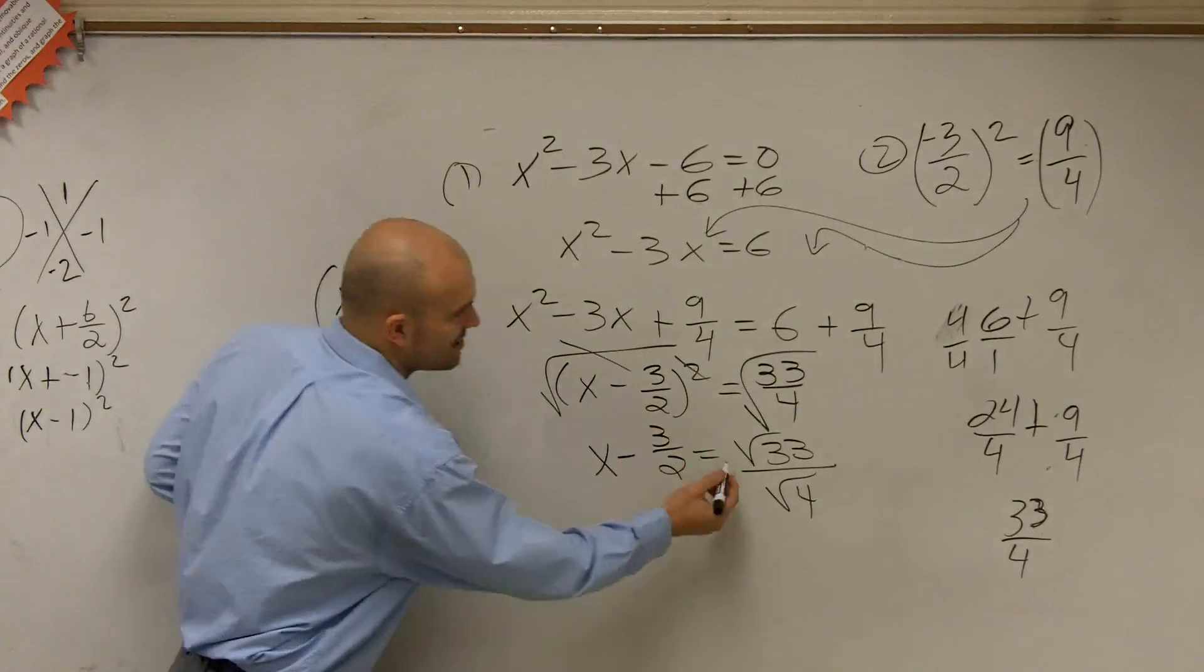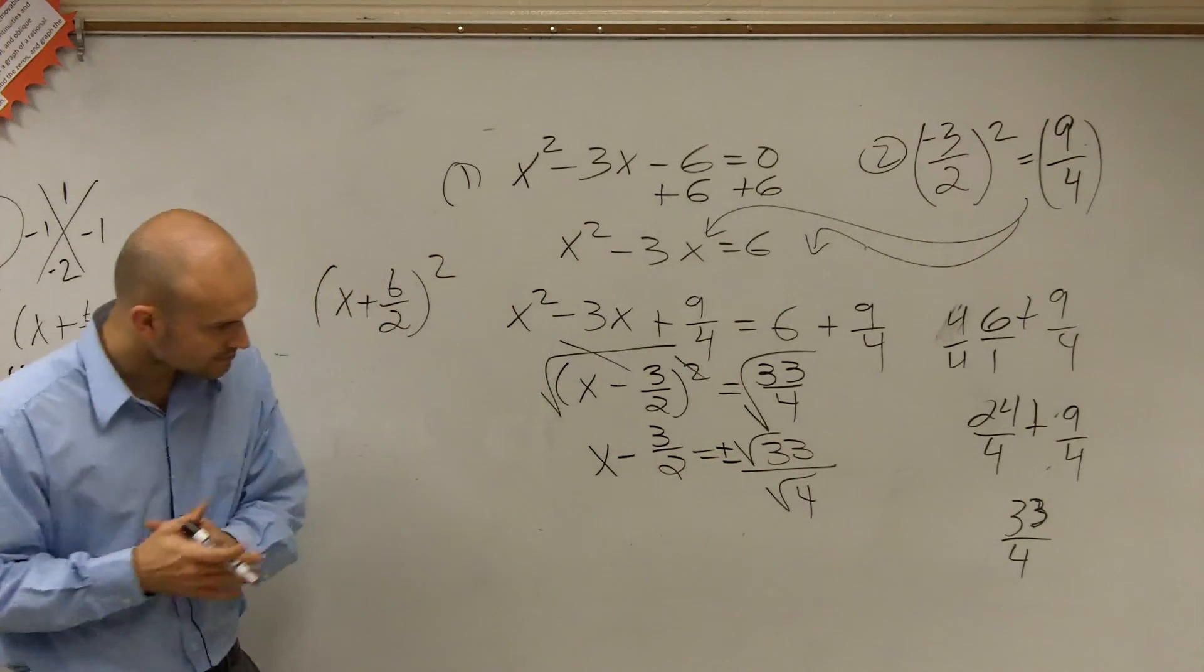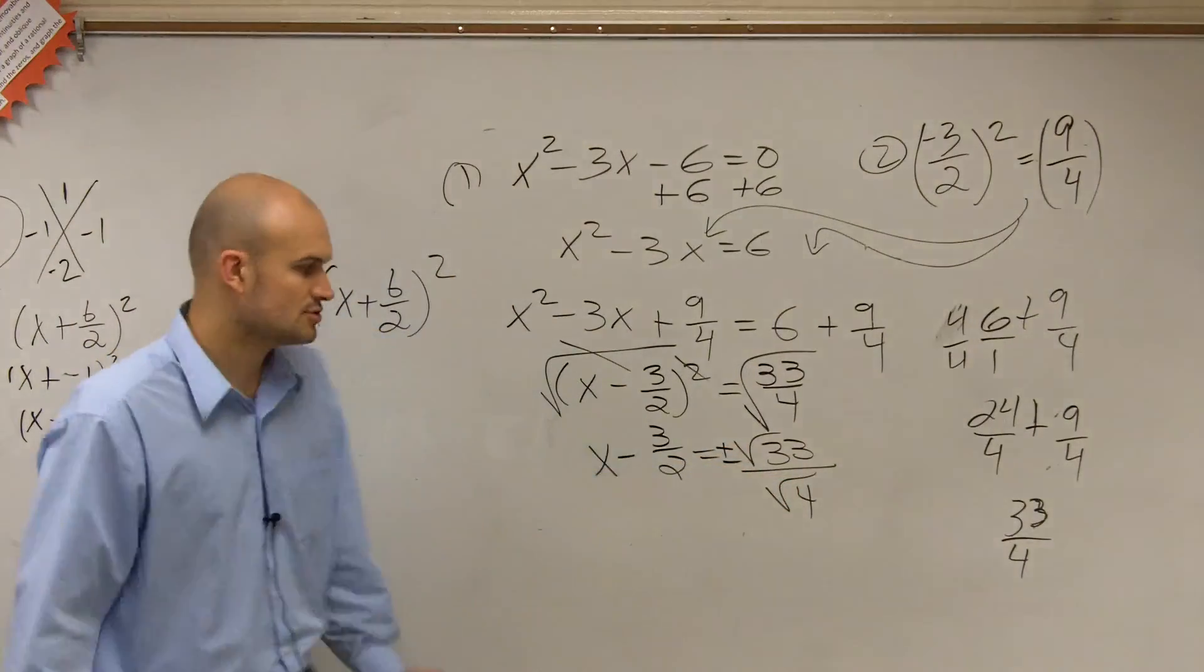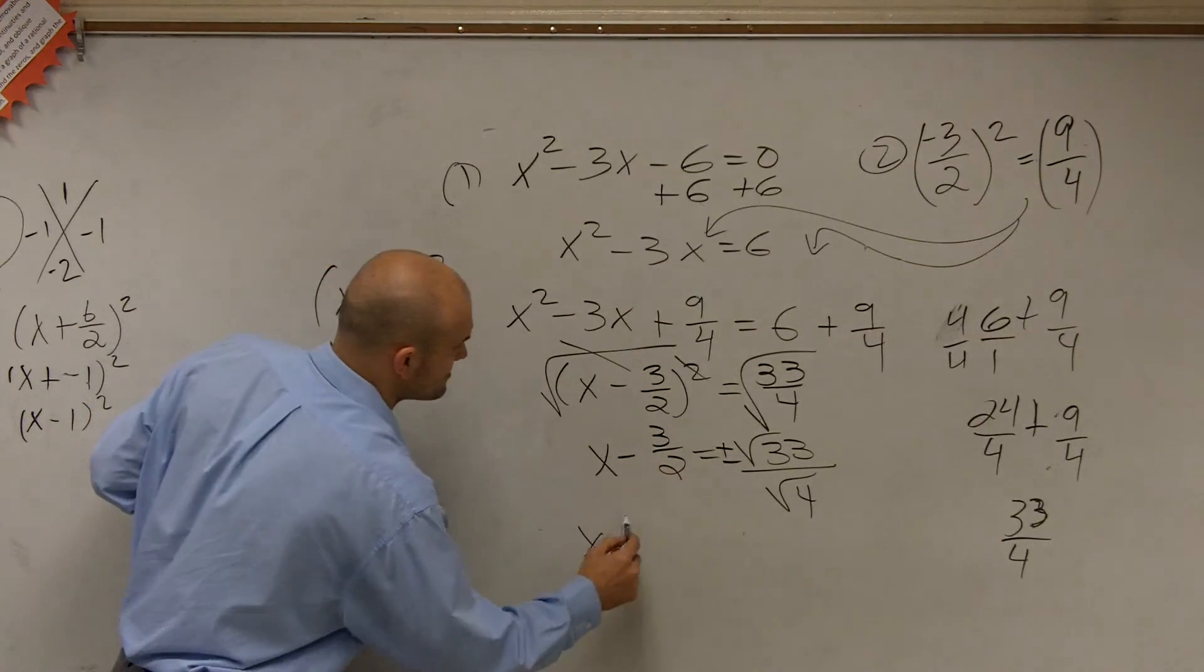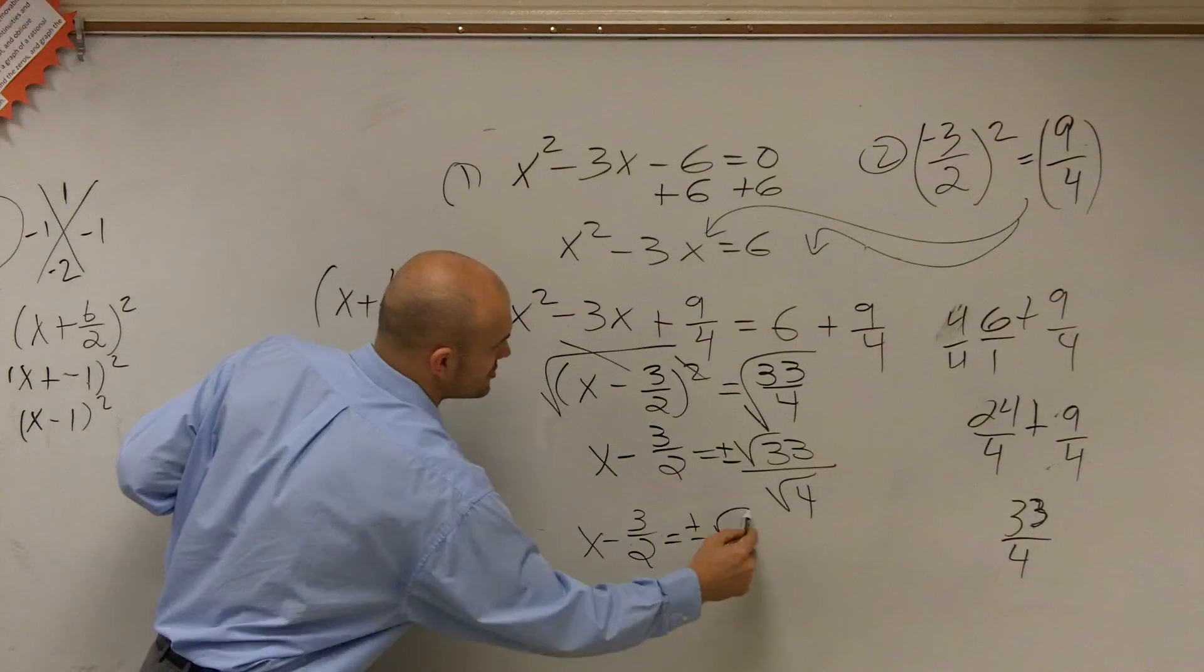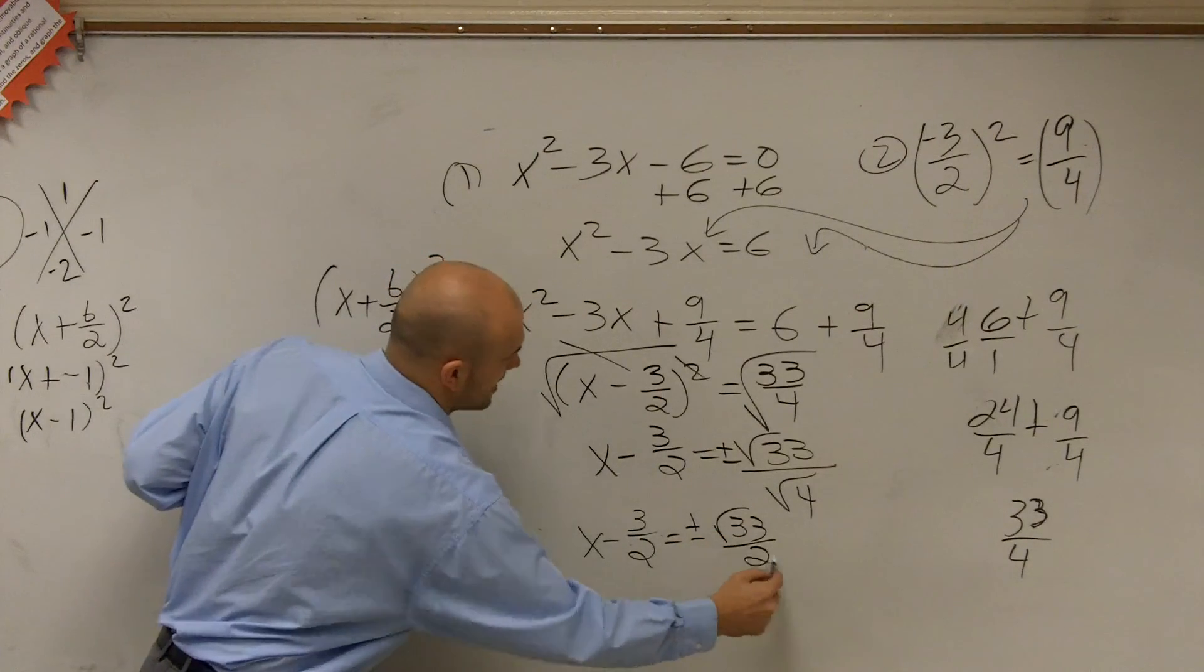Well, ladies and gentlemen, and we also got to make sure we include plus or minus. We know what the square root of 4 is, which is 2. So x minus 3 halves equals plus or minus the square root of 33 divided by 2.